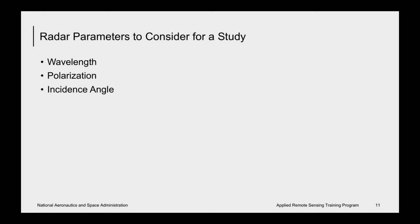A very important thing to remember about SAR is that the images contain information about two things: structure and the dielectric properties of the land surface. There are radar parameters and surface parameters that influence the characteristics of the signal. The next sections will discuss three radar parameters that influence transmission characteristics: wavelength, polarization, and incidence angle.